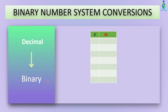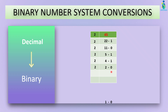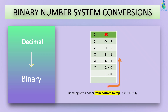To convert from decimal to binary we will use the division method. We divide by the base of binary, which is 2. The answer is 22 and the remainder is 1. Divide again — answer is 11, remainder is 0. Continue: answer is 5, remainder is 1; answer is 2, remainder is 0. When the answer is smaller than the divisor, we stop. Read the remainders from bottom to top — the answer is 101101 in binary.